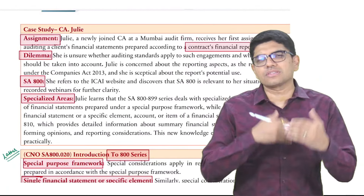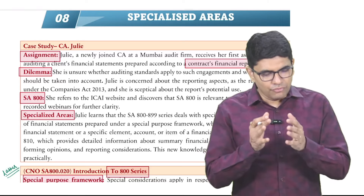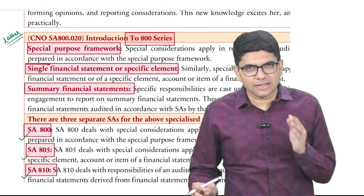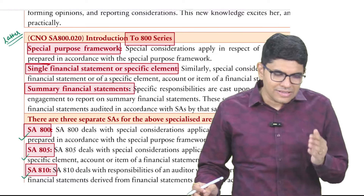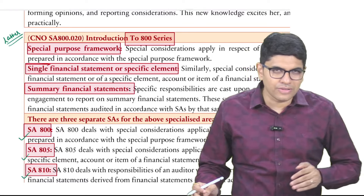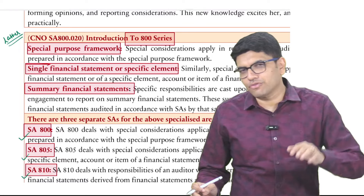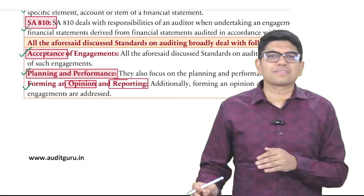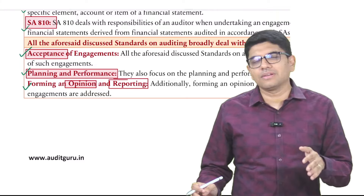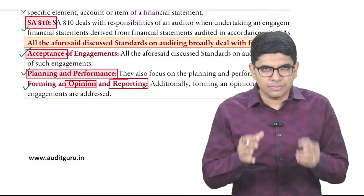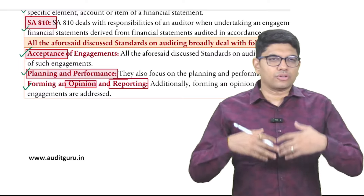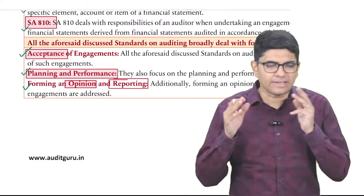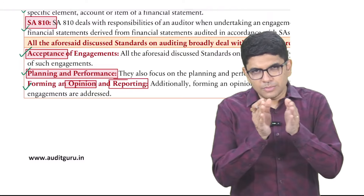There is a case study, and simply the case study involves application of knowledge of the 800 series — nothing else. The 800 series has three standards: SA 800, 805, and 810. SA 800 deals with audit of special purpose financial statements; SA 805 deals with audit of single financial statement and element of financial statement; SA 810 deals with audit of summary financial statements. All three standards have one thing in common — they talk about whether to accept these assignments, then how planning and performance should be done, and finally how opinion should be formed and how reporting should be done.